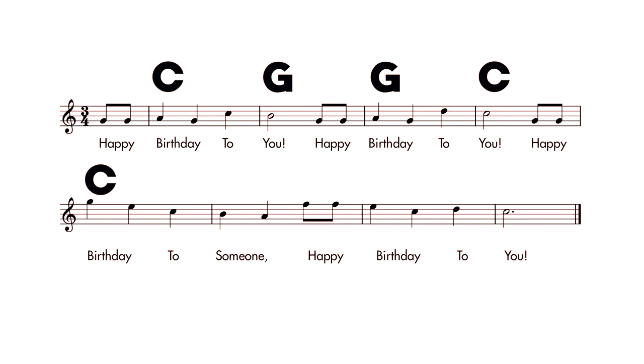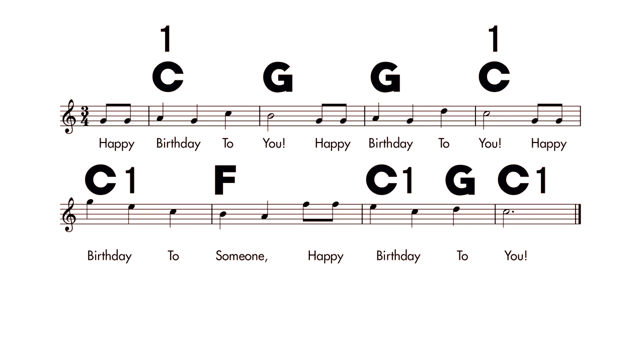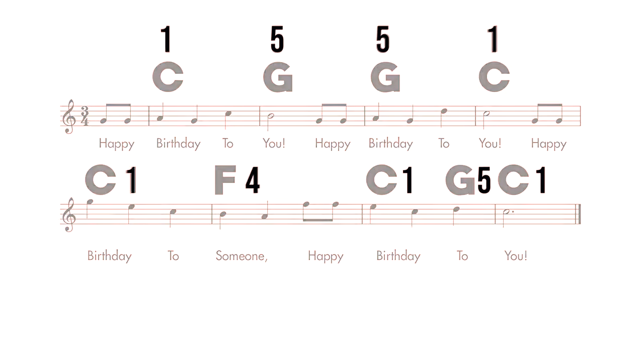The chord progression for 'Happy Birthday' really just has three chords: the C chord, which is the one chord; the G chord, where G is the fifth note of the scale, so that's the five chord; and then F, which is the four chord. So to remember 'Happy Birthday,' I just remember one, five, five, one, one, four, one, five — it's like I memorized its phone number.